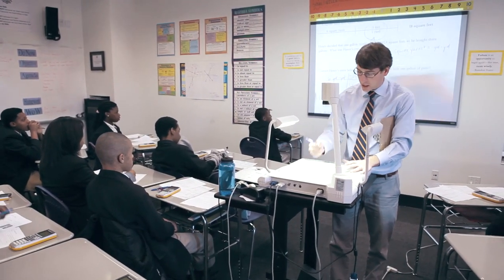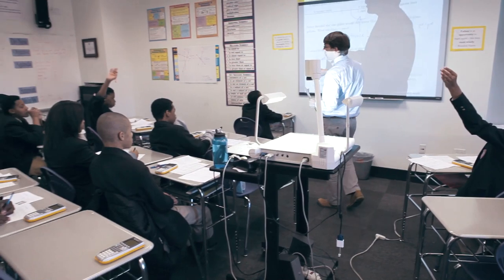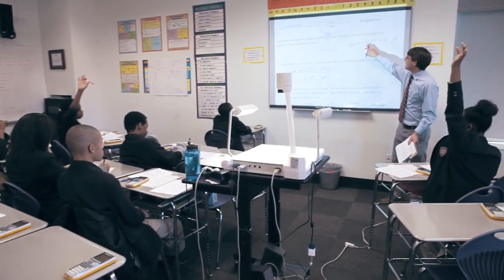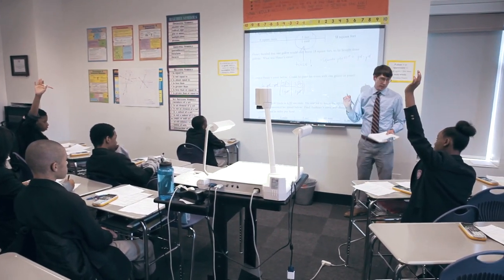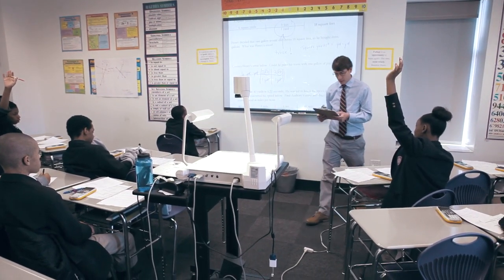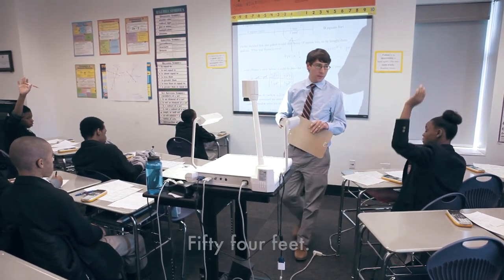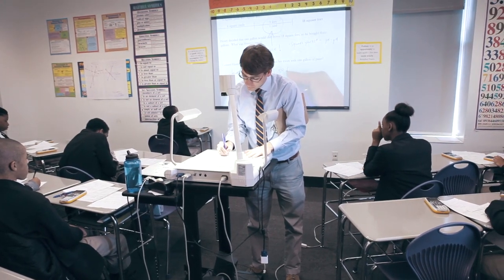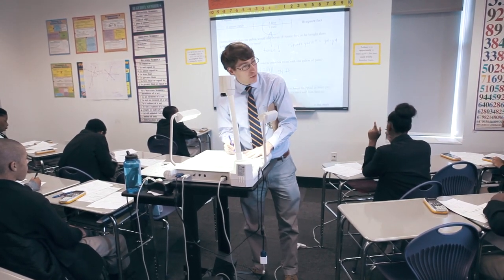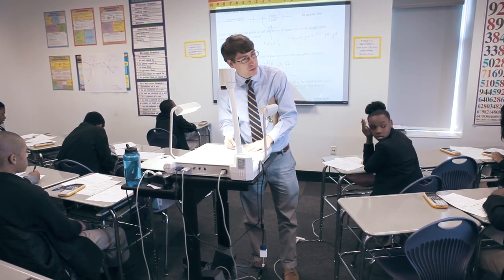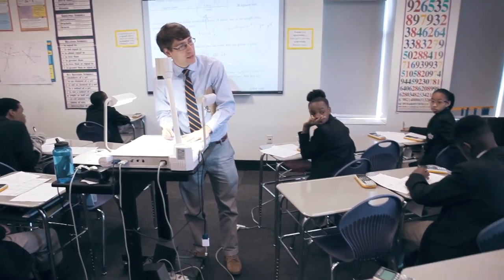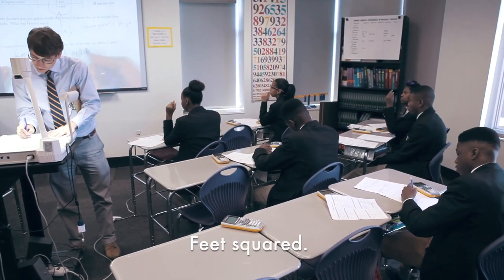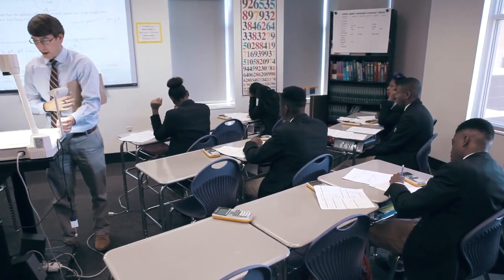Raise your hand if you can tell me: six square yards is truly equal to what number? Because it is not equal to 18 square feet. What is it truly equal to? Adrian? 54 feet. Now Adrian, remember that we have feet times feet — what do we call feet times feet? Feet squared. That would be called feet squared. Absolutely correct.